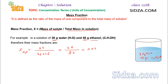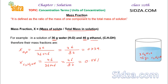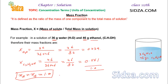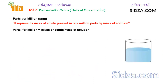So the mass fraction of water comes out to be 0.439. The mass fraction of ethanol (C₂H₅OH) will be 46 divided by 82, which equals 0.561. If you add these two values — 0.439 plus 0.561 — the sum equals 1.0. So for any binary solution, the mass fraction of A plus mass fraction of B equals 1.0, meaning the mass fraction of A equals 1 minus mass fraction of B, and vice versa.